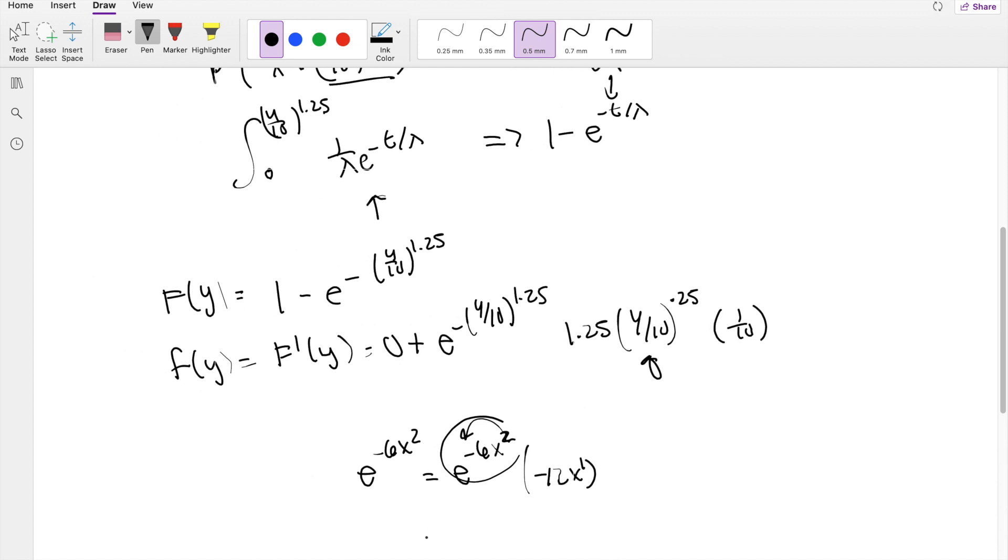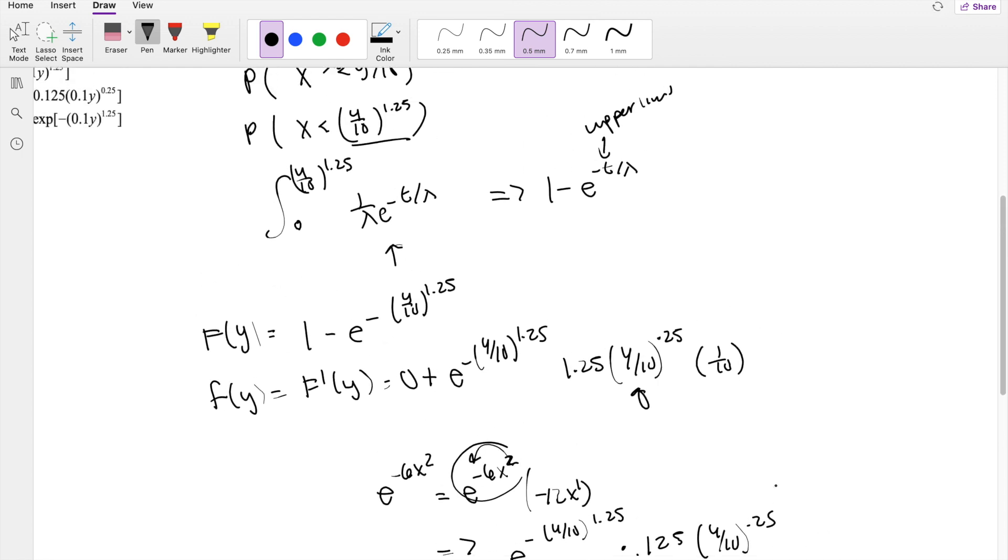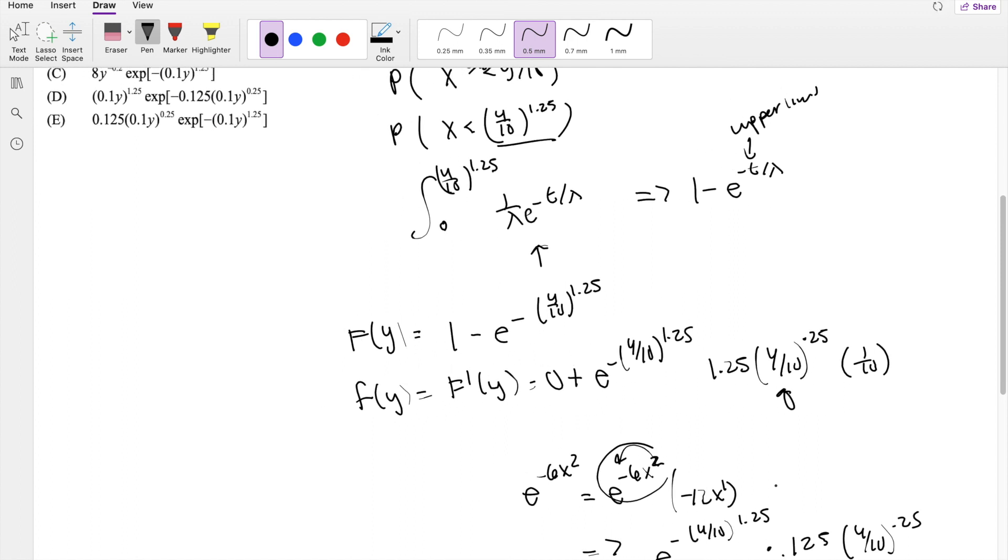So simplifying this a little bit further, you get this is equal to e to the negative y over 10 to the 1.25 times 0.125, y over 10 to the 0.25 power, which is exactly just the answer e.